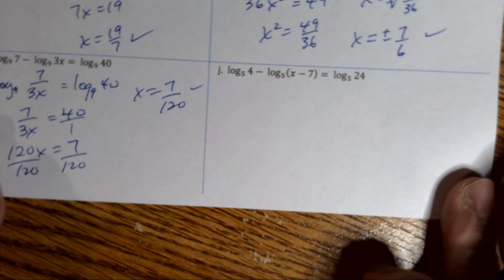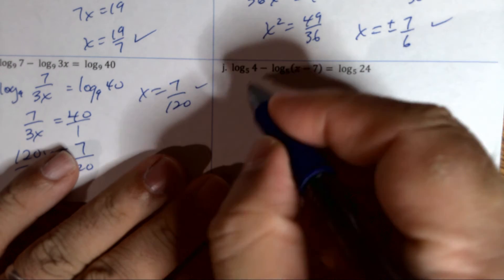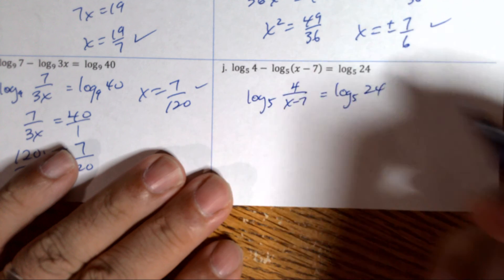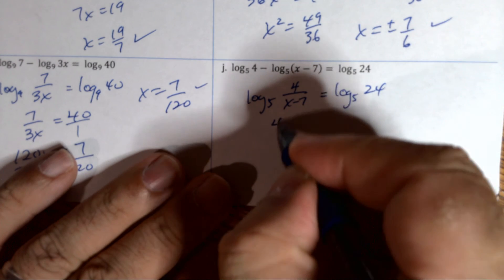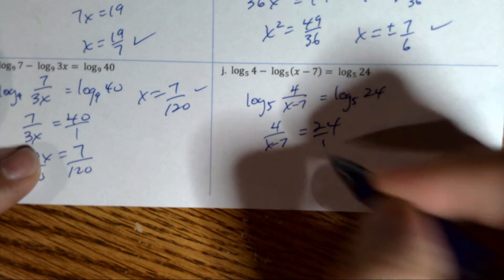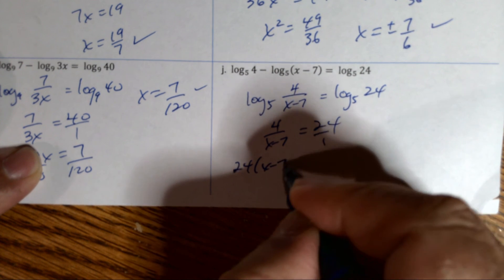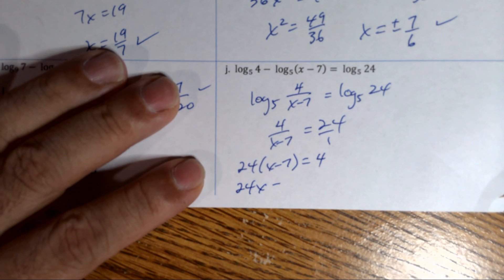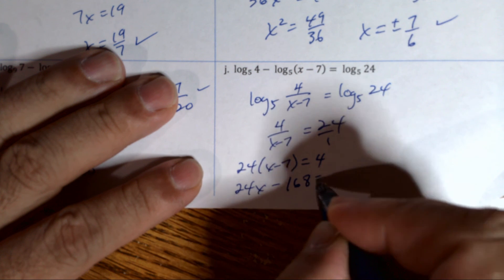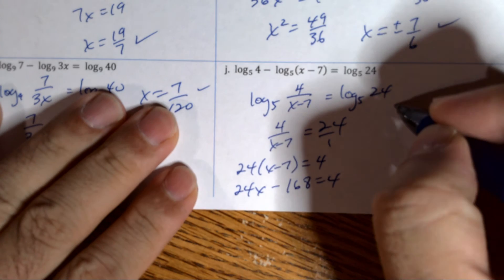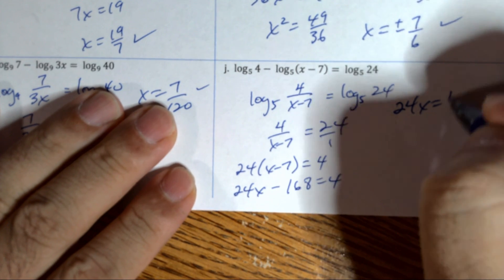For example J, rewrite as log base 5 of (4/(x − 7)) = log base 5 of 24. Drop the logs: 4/(x − 7) = 24. Cross-multiplying: 24(x − 7) = 4. Distributing: 24x − 168 = 4. Adding 168 to both sides gives 172.